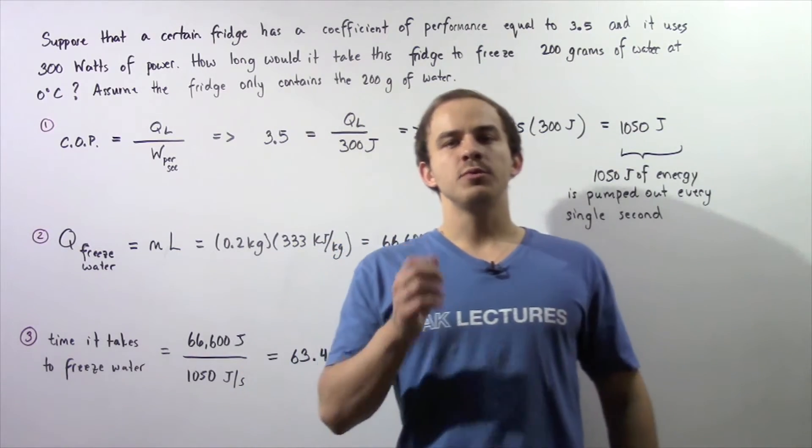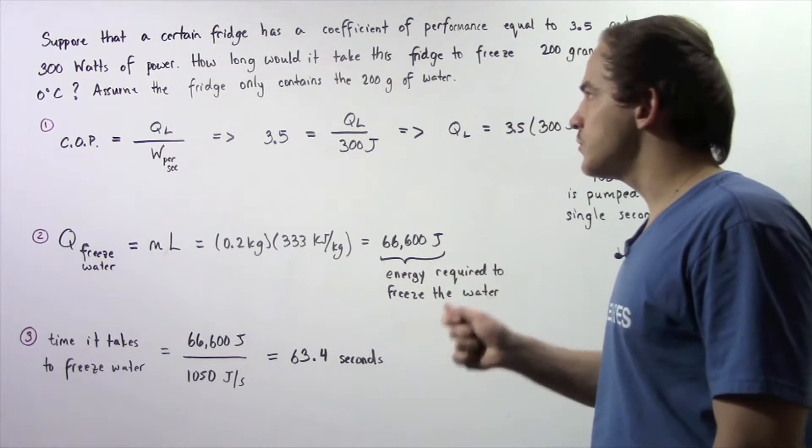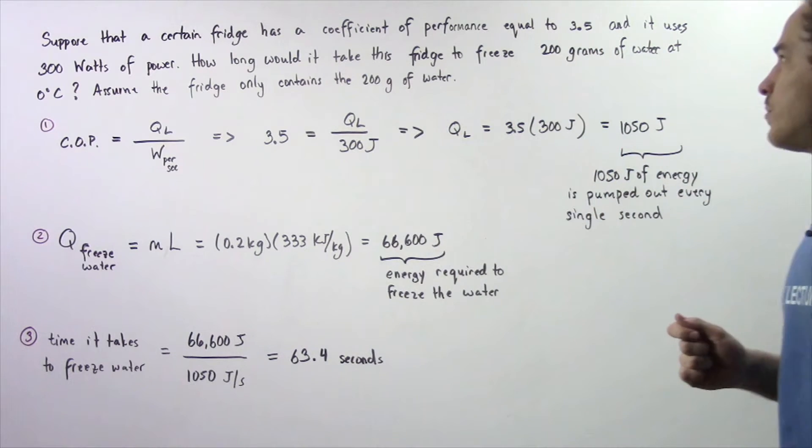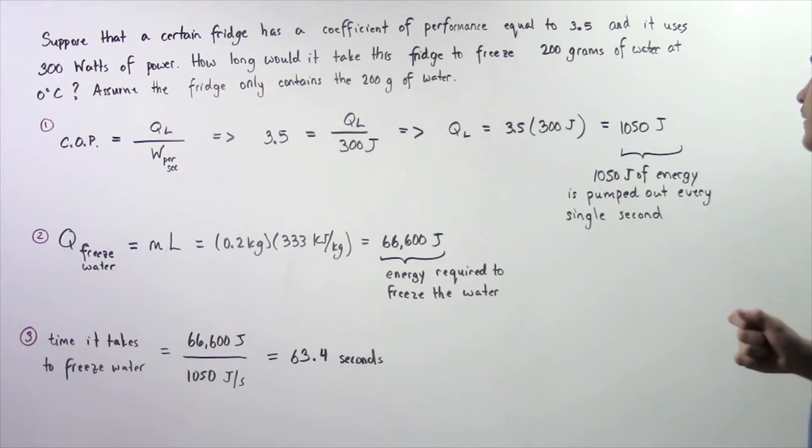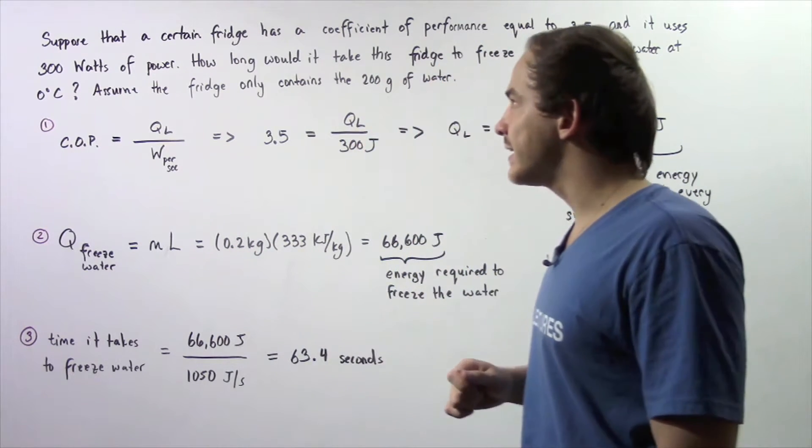In this lecture, we're going to deal with the reverse heat engine. So let's suppose that a certain fridge has a coefficient of performance equal to 3.5 and it uses 300 joules every single second.